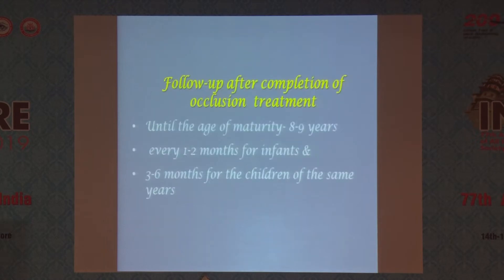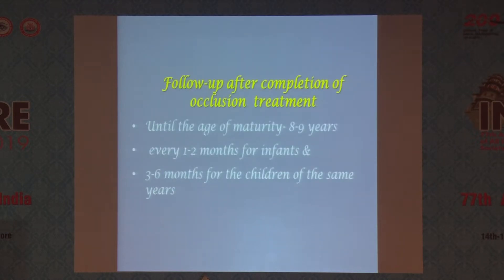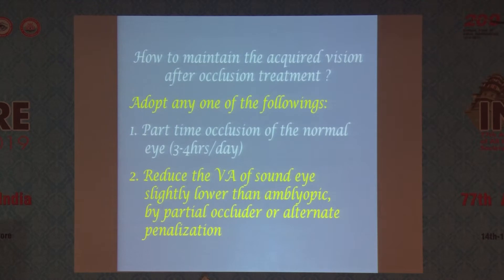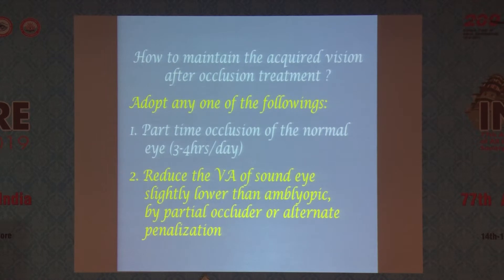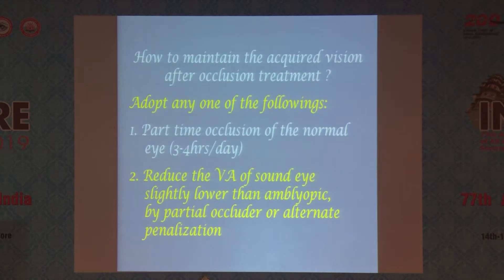If there is no improvement in vision after three to six months of proper occlusion, consider stopping. Once one-to-one vision is achieved, you must follow all these patients up to eight to nine years. For maintenance, part-time occlusion of the normal eye or reducing the visual acuity of the sound eye slightly is recommended. Any required surgery must be done within six months of the amblyopia treatment.